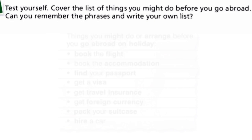And the last exercise, number three: test yourself. Cover the list of things you might do before you go abroad — can you remember the phrases? Write your own list. You need to cover the golden part and write a list of things you should do before you go abroad. You can use the phrases or sentences that we covered in the golden part. The vocabularies and expressions that you learned are really useful and you can use them a lot when you talk in English. If you have any questions, you can ask me in the comments. See you soon!